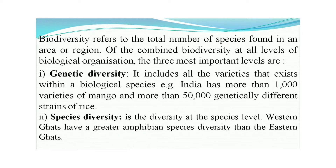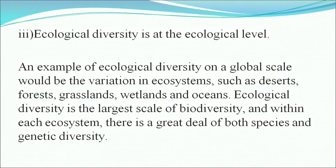Genetic diversity includes all the varieties that exist within a biological species. For example, India has more than 1,000 varieties of mango and more than 50,000 genetically different strains of rice plants. Species diversity is the diversity at the species level — the Western Ghats have greater amphibian species diversity than the Eastern Ghats.